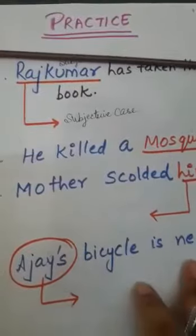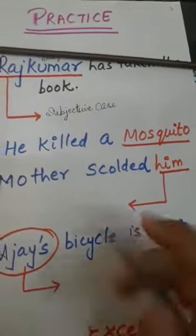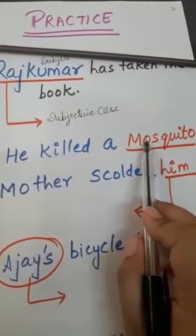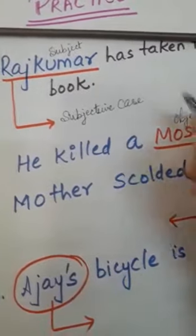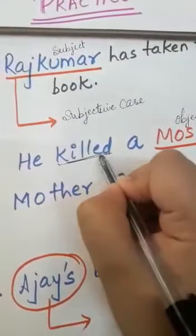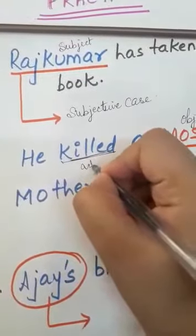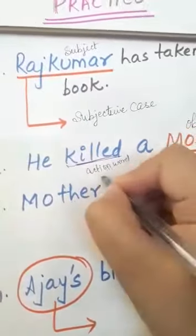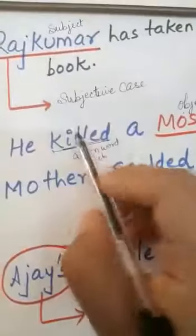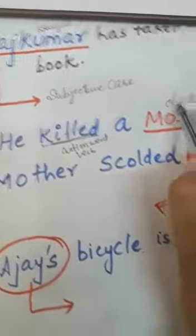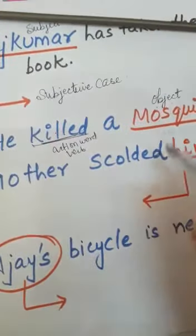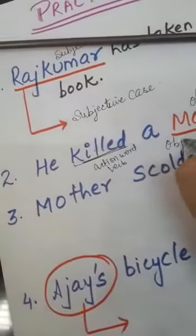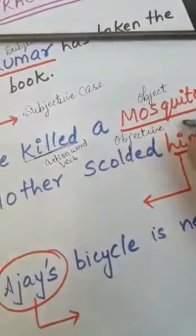See the second example: he killed a mosquito. Here mosquito is the object, which is the receiver of the action — 'killed' is the verb, the action word. So when the noun is used as an object of the verb, this sentence is said to be in objective case.